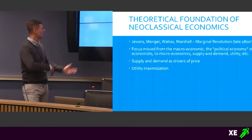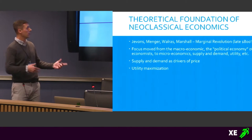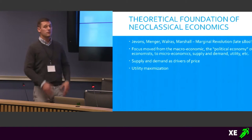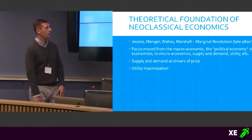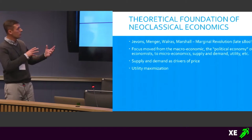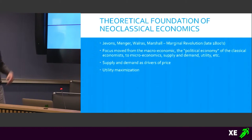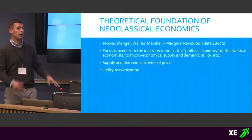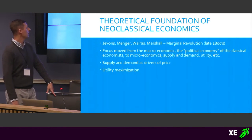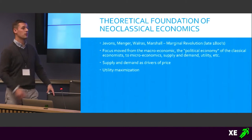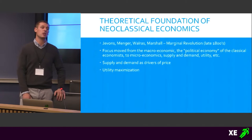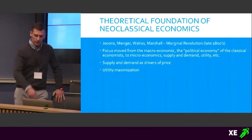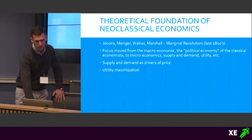This is the theoretical foundation of ecological economics. You look at neoclassical economics and you switch the names around — Jevons, Menger, Walras, Marshall — the marginal revolution of the 1800s. The focus moved from macroeconomic political economy of the classical economists to microeconomics: supply and demand, utility, utility maximization, profit maximization. This is the theoretical foundation of neoclassical economics.